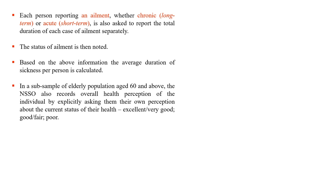Each person reporting an ailment, whether chronic or acute, is also asked to report the total duration of each case of ailment separately. Based on this information, the average duration of sickness per person is calculated. There is also a sub-sample of elderly population aged 60 and above, and NSSO records their overall health perception by explicitly asking whether their current health status is excellent, very good, good, fair, or poor.